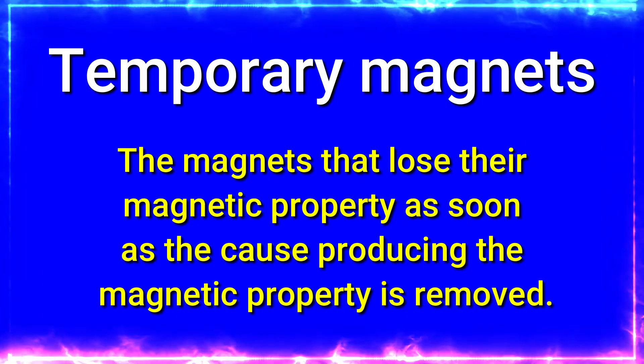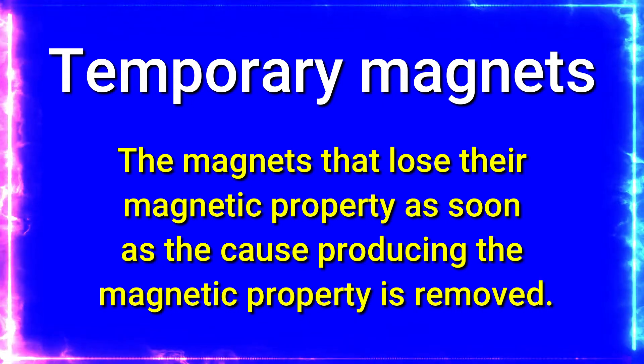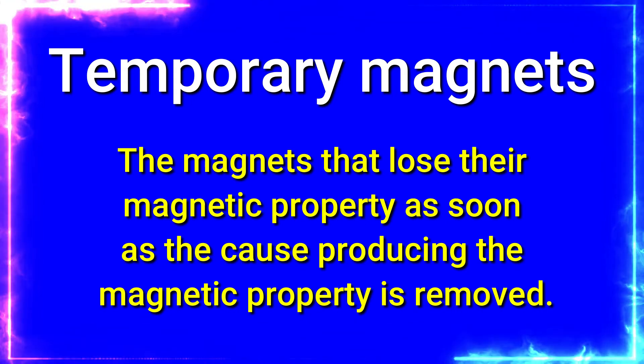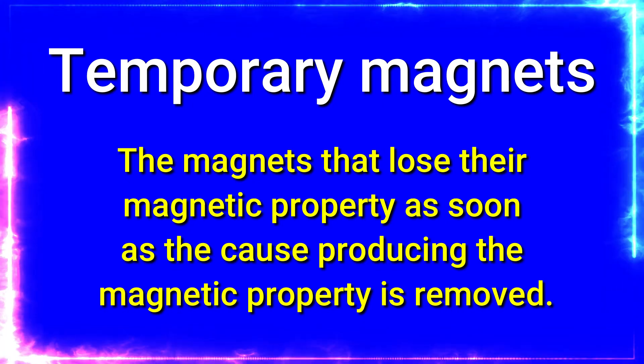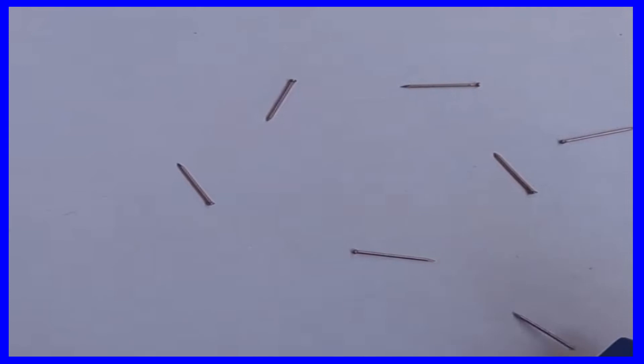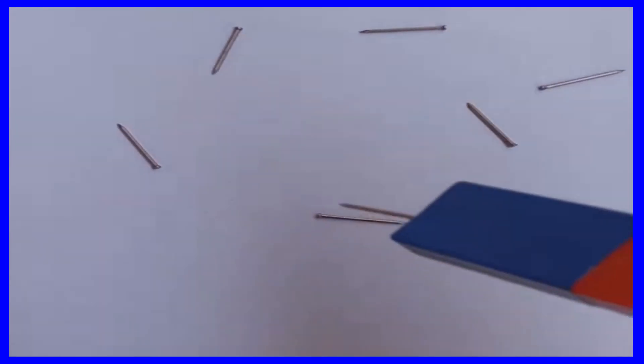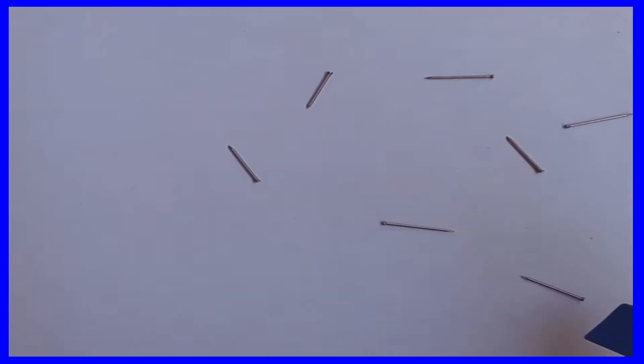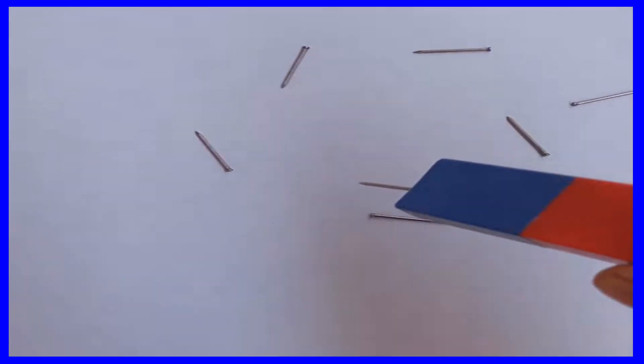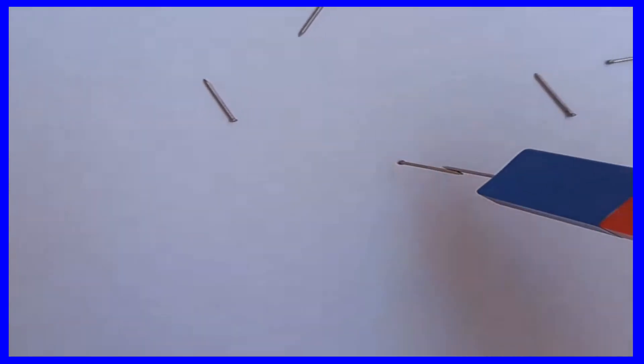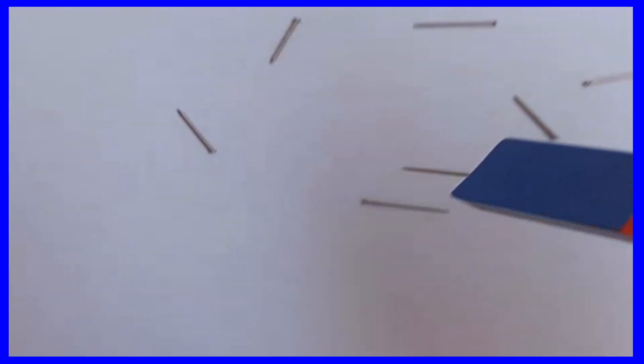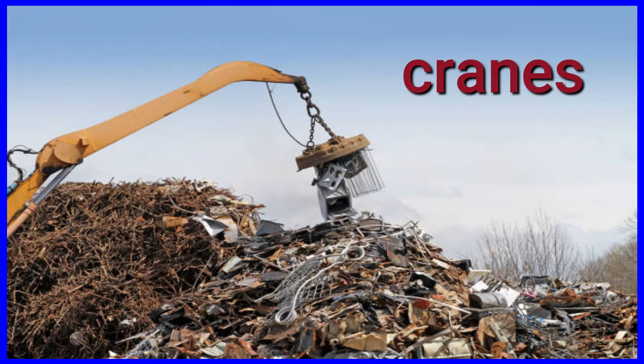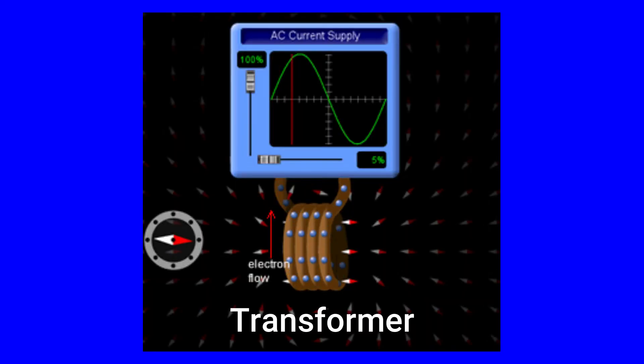Temporary magnets are those magnets that lose their magnetic property as soon as the cause producing their magnetic property is removed. As you can see here, nails get attracted to the magnet. The nails also get magnetized and attract other nails. As soon as you remove these nails from the magnet, the nails lose their magnetic property. We can see temporary magnets in cranes, transformers, etc.